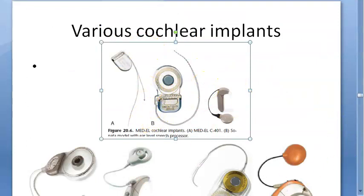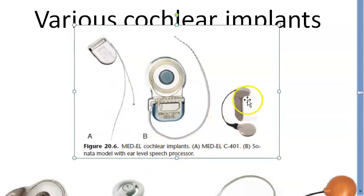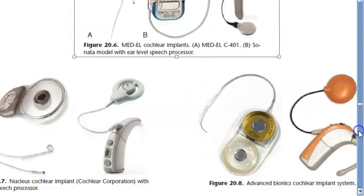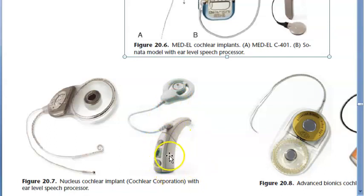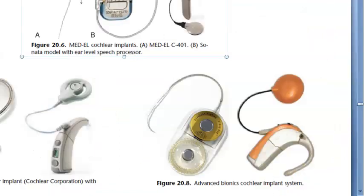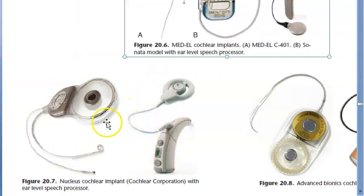Various cochlear implants: the MED-EL cochlear implant MED-EL C401 Sonata, model ear-level speech processor. Then the Nucleus cochlear implant by Cochlear Corporation with ear-level speech processor - it looks like a behind-the-ear speech processor. The external parts including speech processor are outside; the internal receiver and all that are inside. Advanced Bionics cochlear implant system - the external part and the internal one, with the electrode array going spiral.